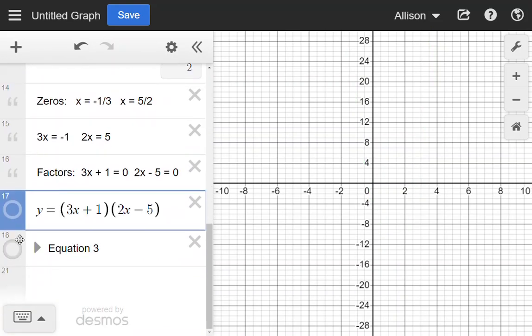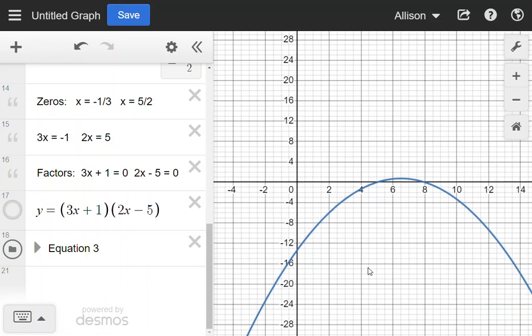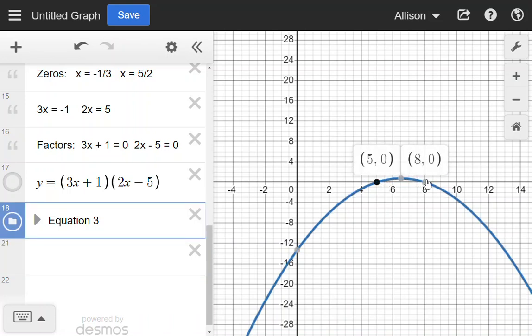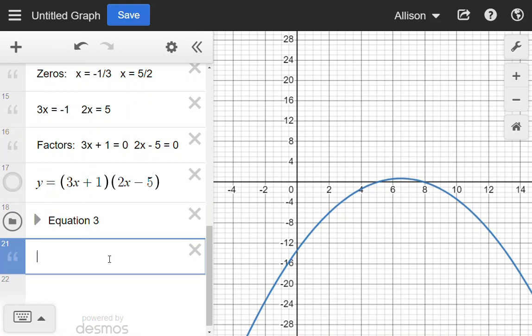In the case of my third graph down here, there's my graph. I want to write its equation. I'm going to start this one the same way. With factors from the zeros, 5 and 8. These zeros are the x-intercepts. They are at 5 and 8. So my zeros are x = 5 and x = 8.